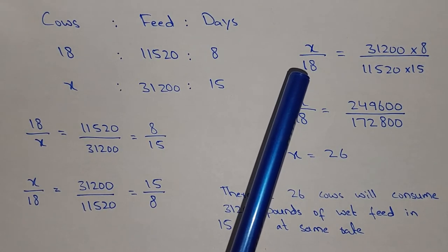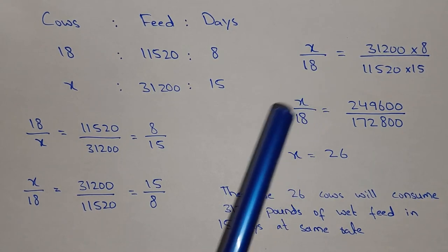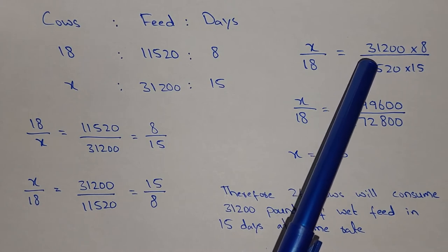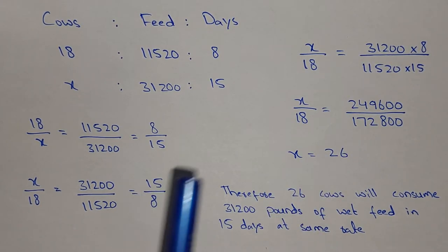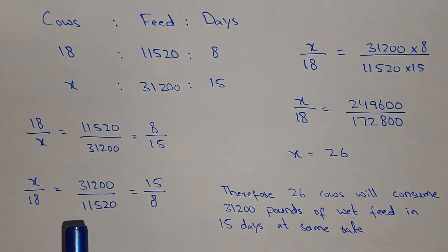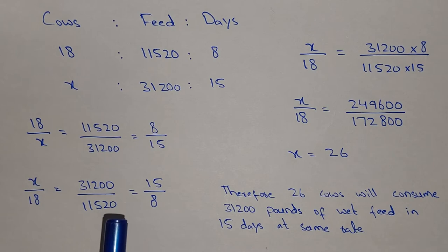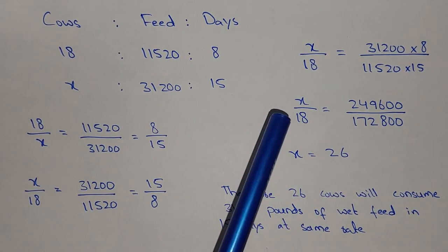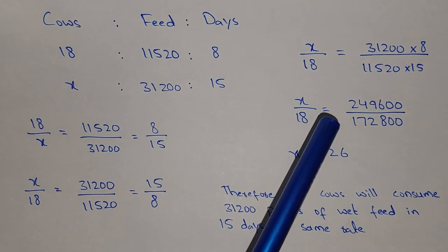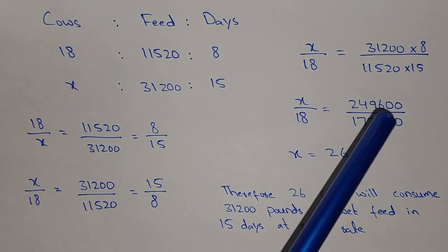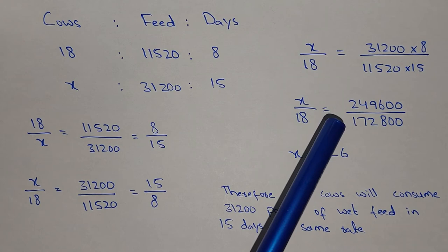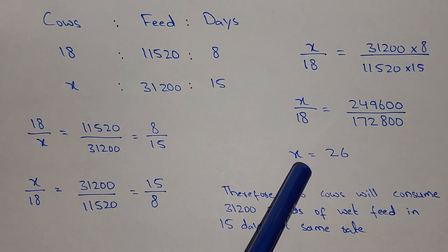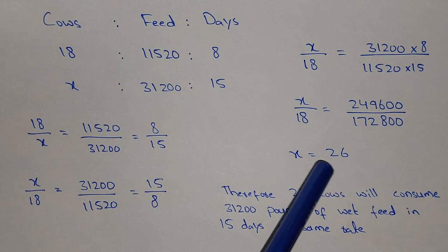X divided by 18 will be the same. So we will cross multiply these two: 31,200 into 8 divided by 11,520 into 15. So the value of X will be 26.